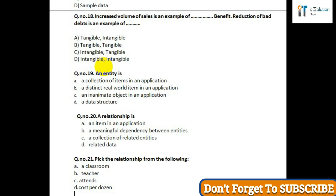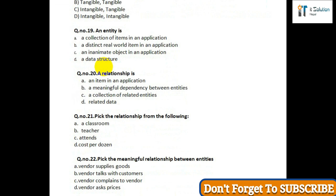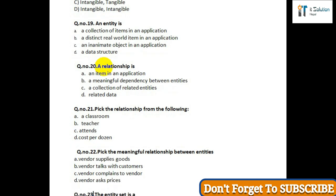Question number twenty-one: Pick the relationship from the following — option A: a classroom; option B: teacher; option C: attends; option D: cost per dozen. Question number twenty-two: Pick the meaningful relationship between entities — option A: vendor supplies goods; option B: vendor talks with customer; option C: vendor complains to vendor; option D: vendor asks price.